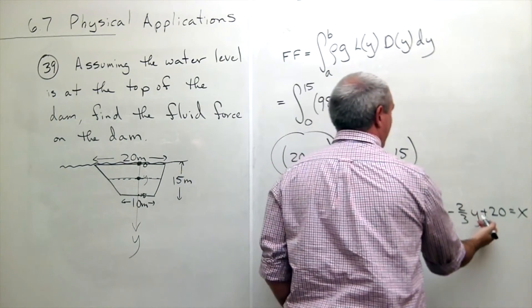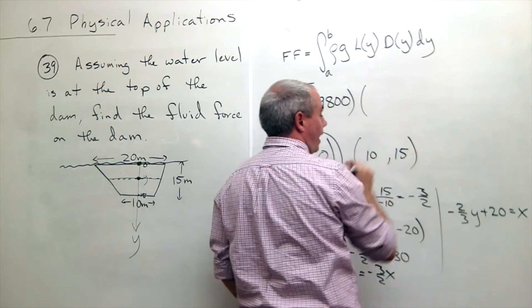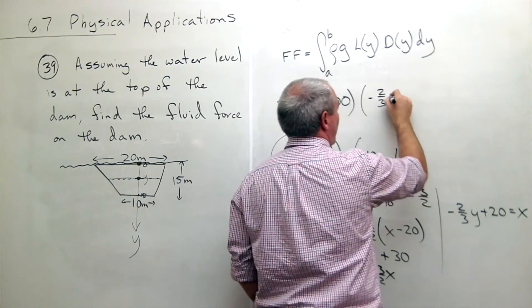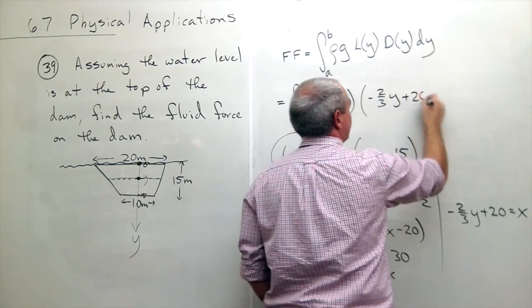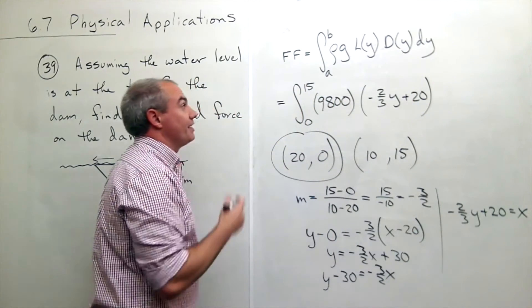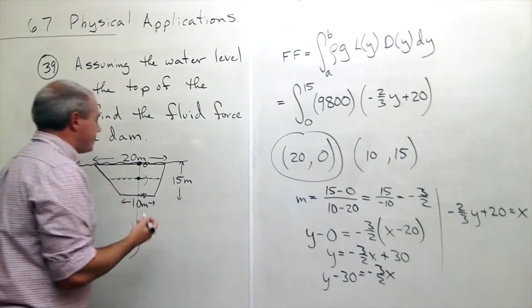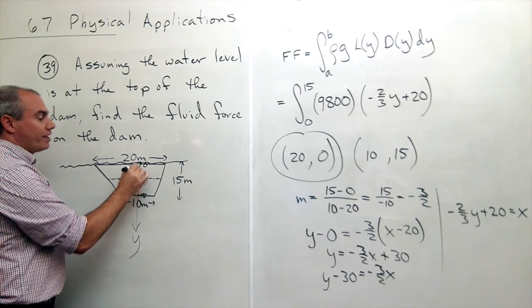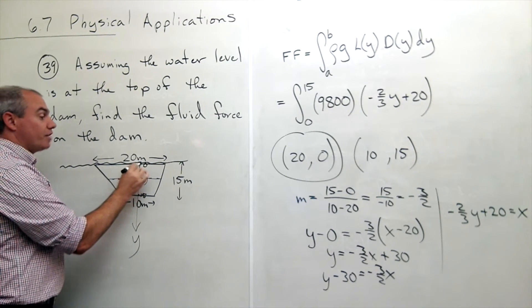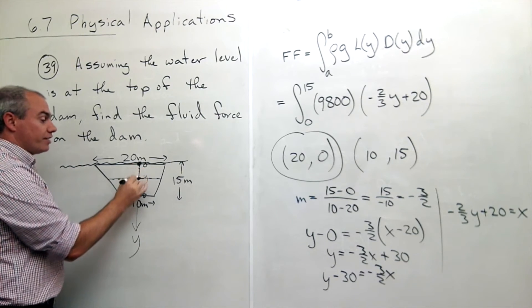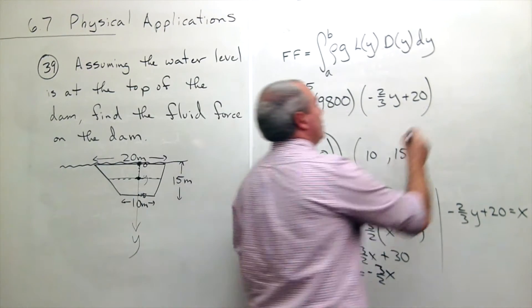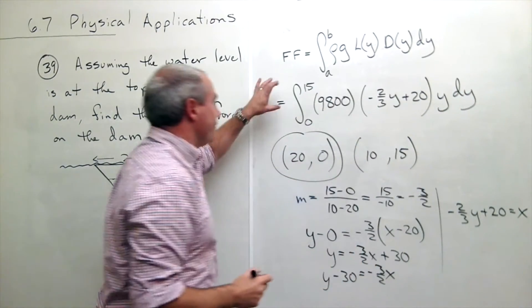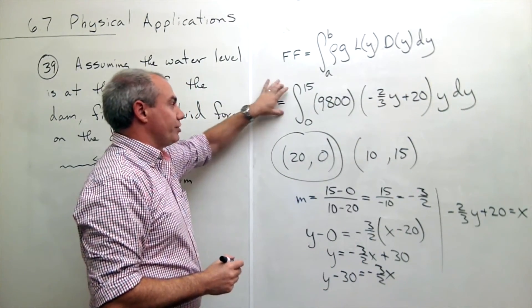So I can plug this in for the length at y. It's negative two-thirds y plus twenty. Now I multiply that by the depth at y. Well, I set it up in such a way so that if I'm sitting here at y, how far is it from the top of the water? Well, the top of the water is zero, so the depth at y is y. So I multiply by y dy, and this is the integral that will get the job done for me.